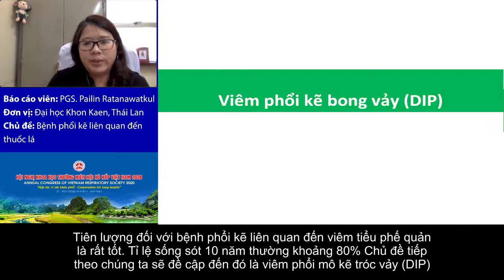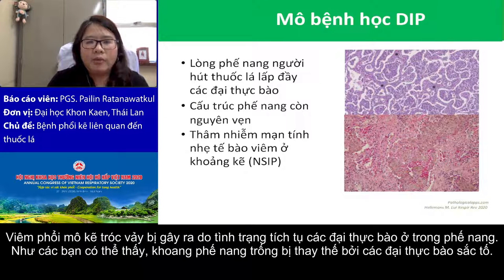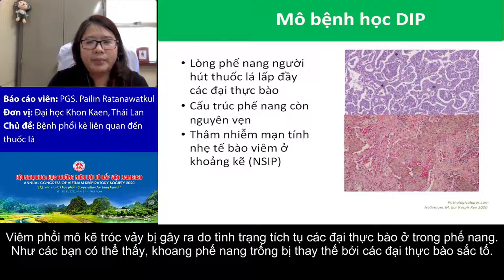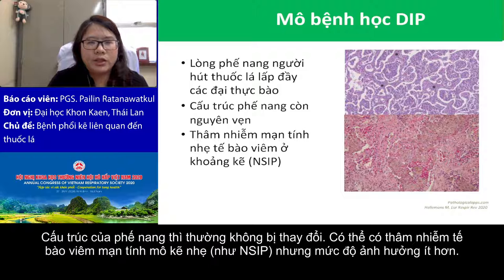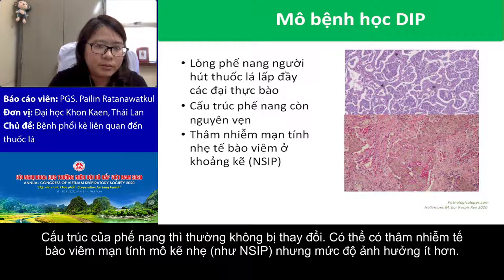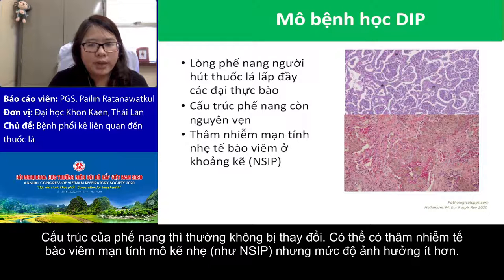The next topic is desquamative interstitial pneumonia or DIP. DIP is characterized by accumulation of smoker macrophage within the alveolar space. As you can see here, the alveolar space is substituted by pigmented smoker macrophage. Here is the smoker macrophage in the alveolar space. The alveolar architecture is generally well preserved. There might be some chronic inflammatory cell infiltration in the interstitium or alveolar septum, but the degree of involvement is much less intense compared to NSIP.